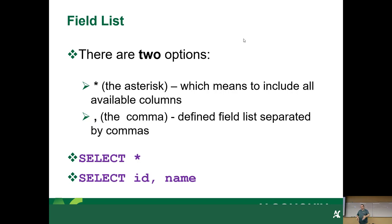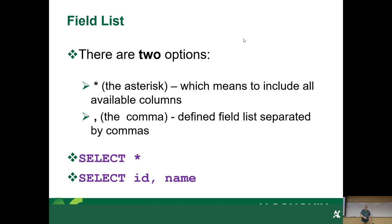If a full record is 500 bytes but you only select an ID (up to 8 bytes for an integer) and a name (maybe 50 bytes), you're suddenly at 58 bytes instead of 500 — an order of magnitude smaller data being transmitted. SELECT star is great when you're exploring and in development, but you do not want to do that in production.